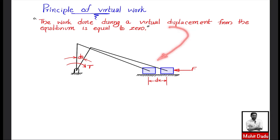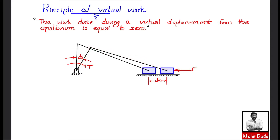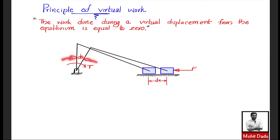This can be explained with a slider-crank mechanism, where the crank, connecting rod, and slider are at an initial equilibrium position, acted upon by an external force F. The slider moves left with an infinitesimally small virtual displacement dx, while the connecting rod transfers forces causing the crank to rotate through an infinitesimally small angular displacement dθ.